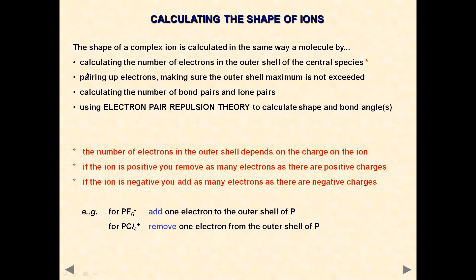The process will remain more or less the same. You calculate the number of electrons in the outer shell of the central atom first, then pair up the electrons, making sure the outer shell maximum is not exceeded. Then, as we did in the previous lesson, calculate the number of bond pairs and lone pairs and use the electron pair repulsion theory to calculate the shape and the bond angle.